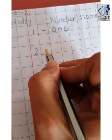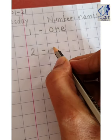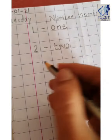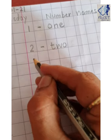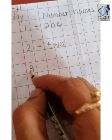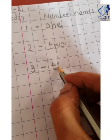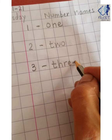Write 2. Put a dash. Write T-W-O, 2. Leave 1 box. Write 3. Put a dash. Write T-H-R-E-E, 3.